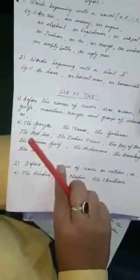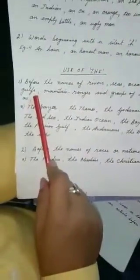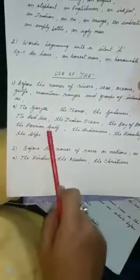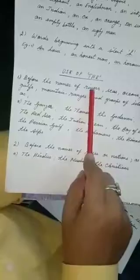Use of THE. Where to use THE? Before the names of rivers, seas, oceans, gulfs, mountain ranges, and groups of islands. As the Ganga, the Thames, the Godavari, the Red Sea, the Indian Ocean, the Bay of Bengal, the Persian Gulf, the Andamans, the Himalayas, the Alps. So before this you have to use THE.